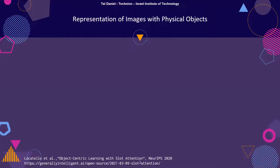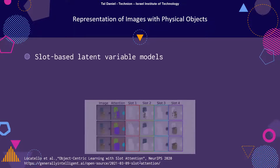Let's begin by asking how to represent images of physical objects. Models like autoencoder or variational autoencoder allow us to compress images to latent codes. However, this representation is usually not good enough for scenes with multiple objects.